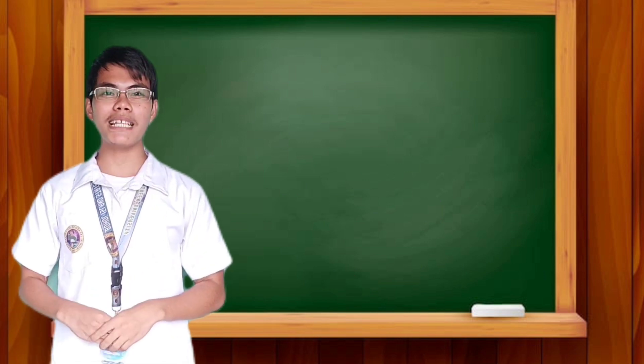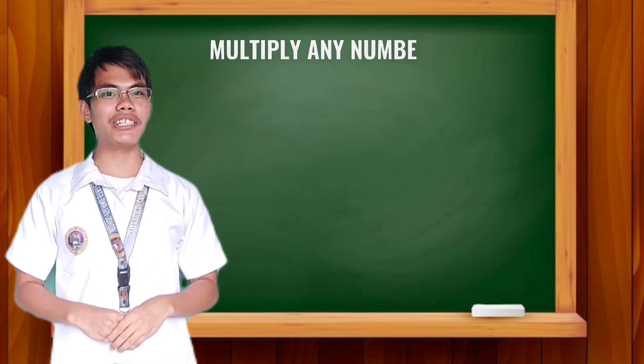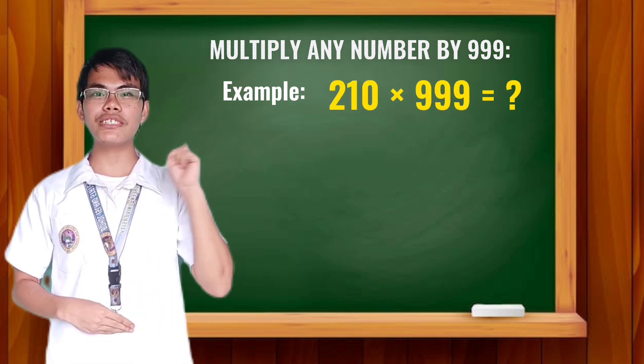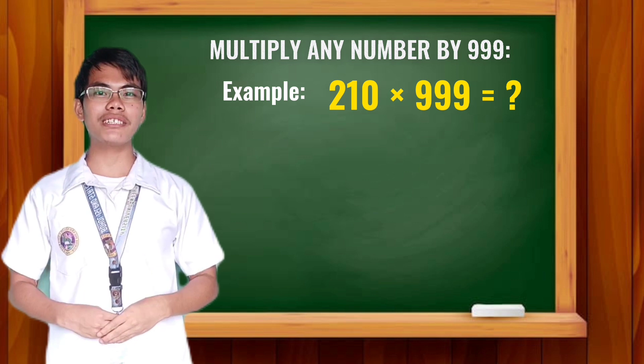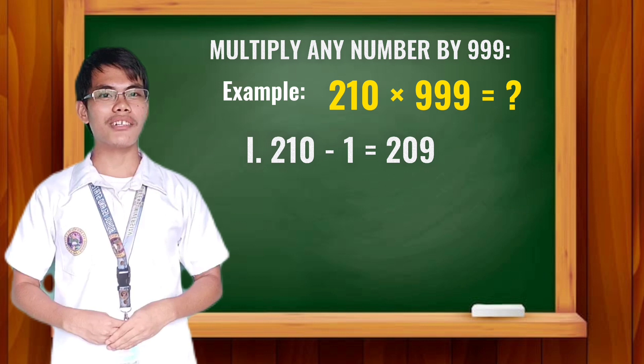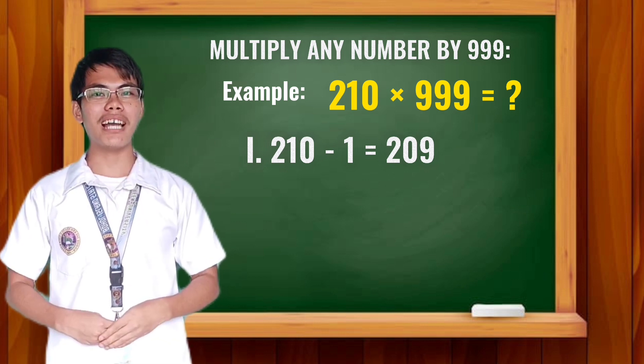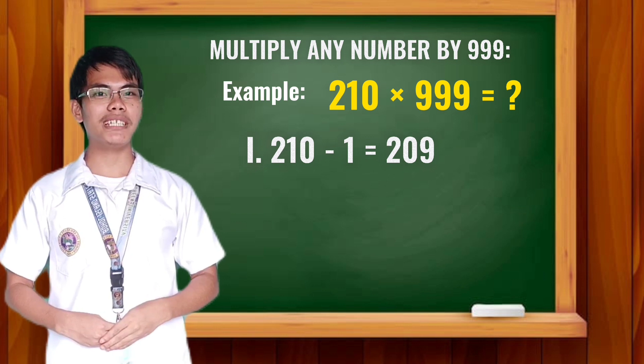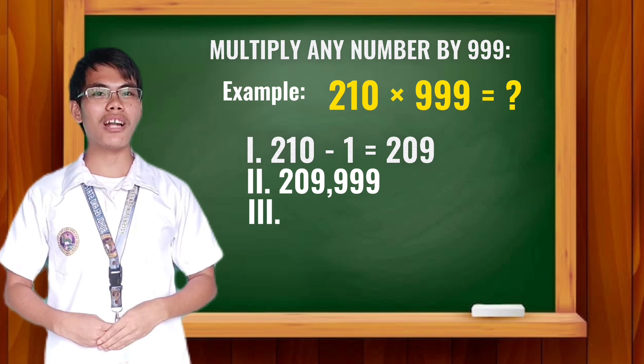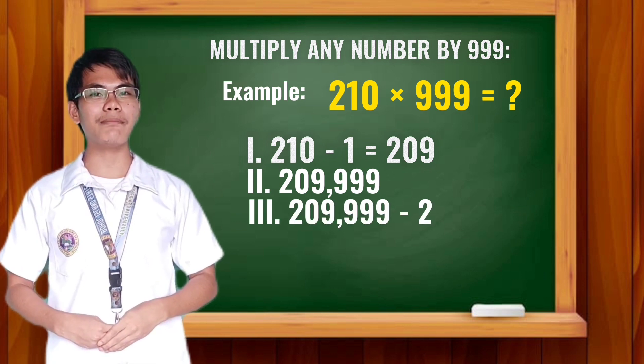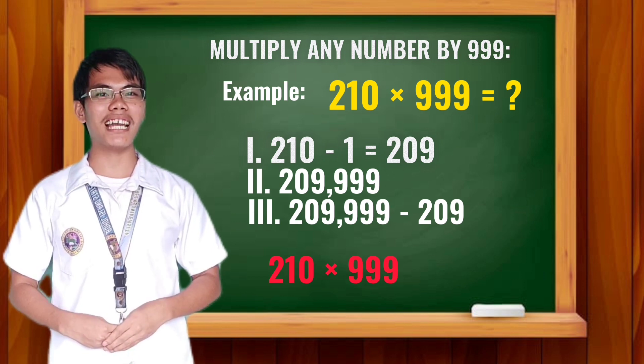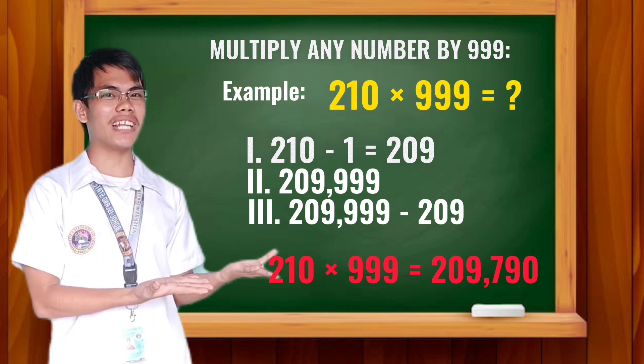And now, we will multiply any numbers dealing by 999. So we have here 210 times 999. First step: Subtract 210 by 1. 210 minus 1 is equal to 209. Next, copy 209 together with 999. It will be 209,999. Lastly, subtract 209,999 by 209. Therefore, 210 times 999 is equal to 209,790.